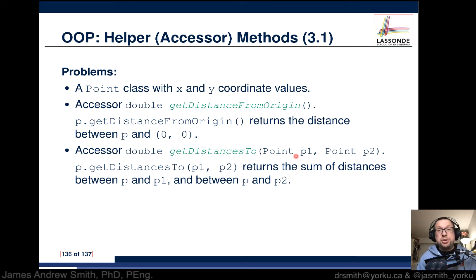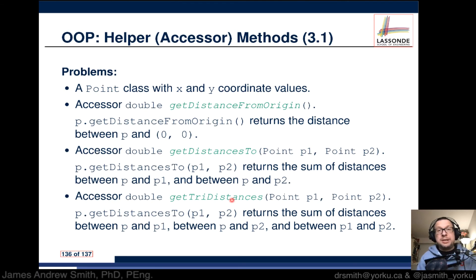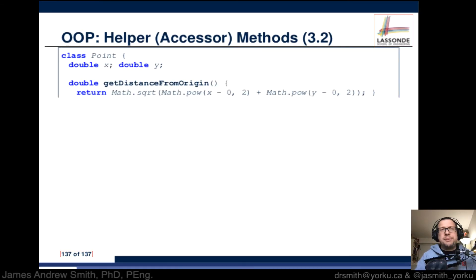Next we have an accessor get distances to, point one and point two, and then we get tri distances or three distances with respect to point one and point two. Get distances in this case will return the sum of distances between p and p1, p and p2, and between p1 and p2.